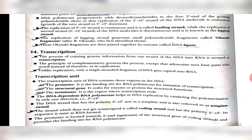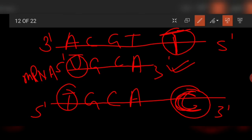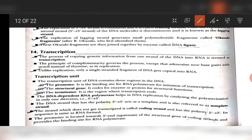For transcription, we require a DNA-dependent RNA polymerase which, like DNA polymerase, works in only one direction — 5 prime to 3 prime. Hence, the DNA strand that is 3 prime to 5 prime will act as the template, and the other strand will act as the coding strand.